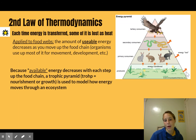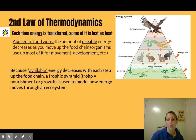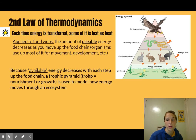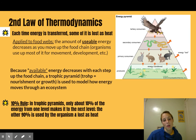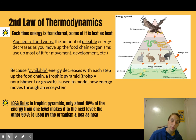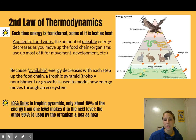If you've got producers on the bottom — your plants — and your primary consumers, who are the ones that eat the producers, then the ones that eat them are secondary consumers, and the ones that eat them are tertiary. As we move up, we can see how energy moves through the ecosystem. The 10% rule is the number that comes out of this, meaning only about 10% of the energy from one level can make it to the next level.